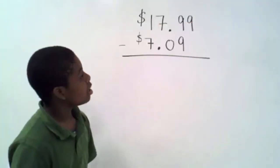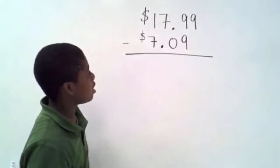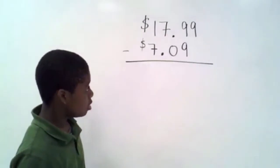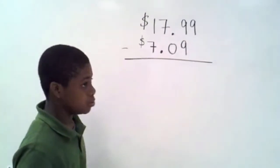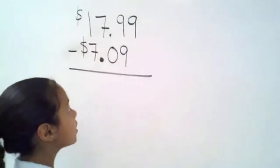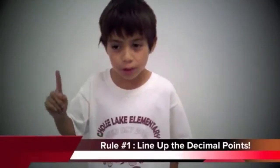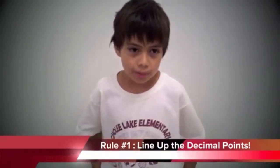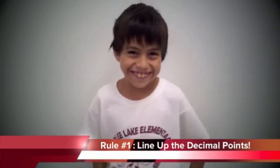Today we're going to learn how to add and subtract money, which is the same thing as adding and subtracting decimals. Let's do an example like this. Seventeen dollars and ninety-nine cents minus seven dollars and ninety-nine cents. Wait, but there's a problem. Can you see it? I see the mistakes. First, we gotta line up the decimals. Rule number one. Whenever you're adding or subtracting money or decimals, first you line up the decimal points.